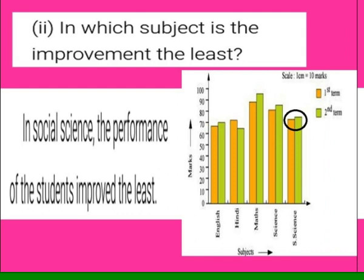Subdivision B: in which subject is the improvement the least? Looking at the bar graph, in Social Science there is not much difference in the heights of the two bars — they are very close to each other. Compared to all other subjects, the heights in Social Science don't differ much, so the performance improved the least in Social Science.